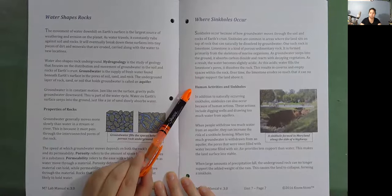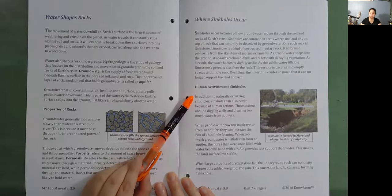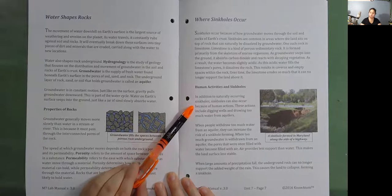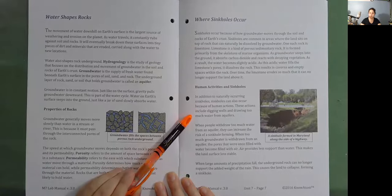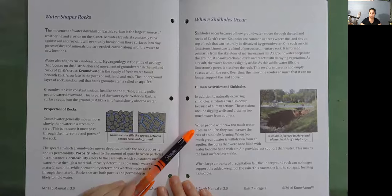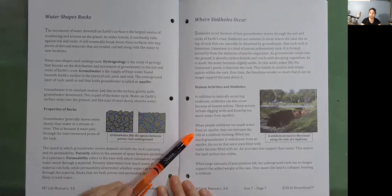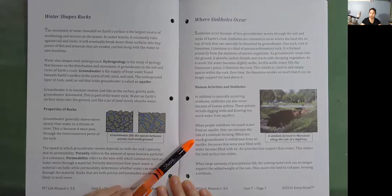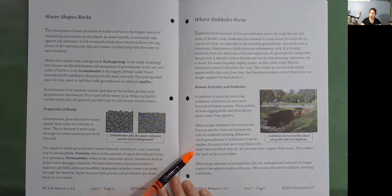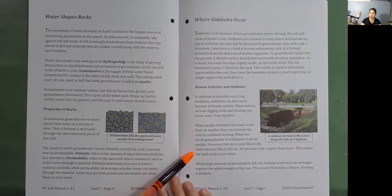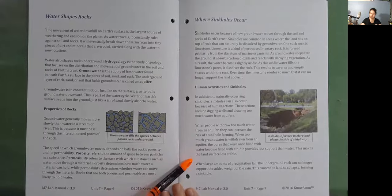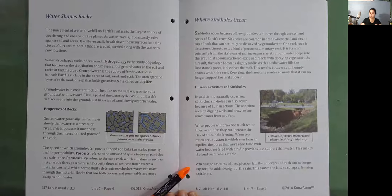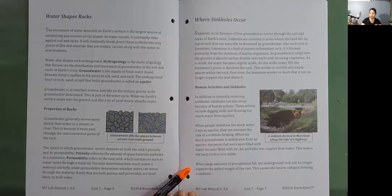Human activities and sinkholes. In addition to naturally occurring sinkholes, sinkholes can also occur because of human actions. These actions include digging wells and drawing too much water from aquifers. When people withdraw too much water from an aquifer, they can increase the risk of a sinkhole forming. When too much groundwater is withdrawn from an aquifer, the pores that were once filled with water become filled with air. Air provides less support than water. This makes the land surface less stable. When large amounts of precipitation fall, the underground rock can no longer support the added weight of the rain. This causes the land to collapse, forming a sinkhole.